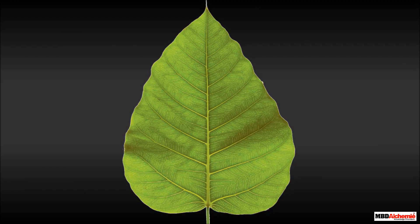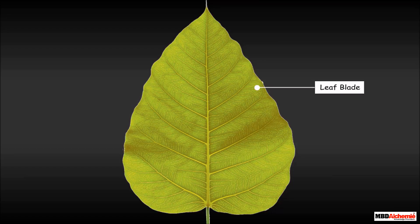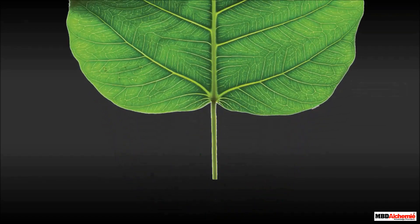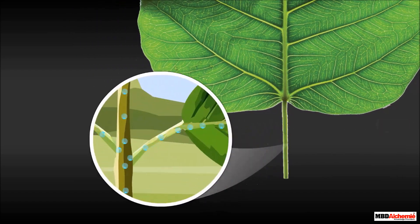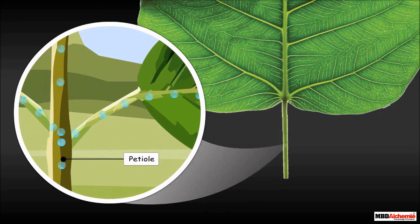The flat and broad part of the leaf is called the leaf blade. The leaf blade is attached to the stem of the plant through a tiny stalk called the petiole. The petiole takes the water from the stem to the leaf blade.